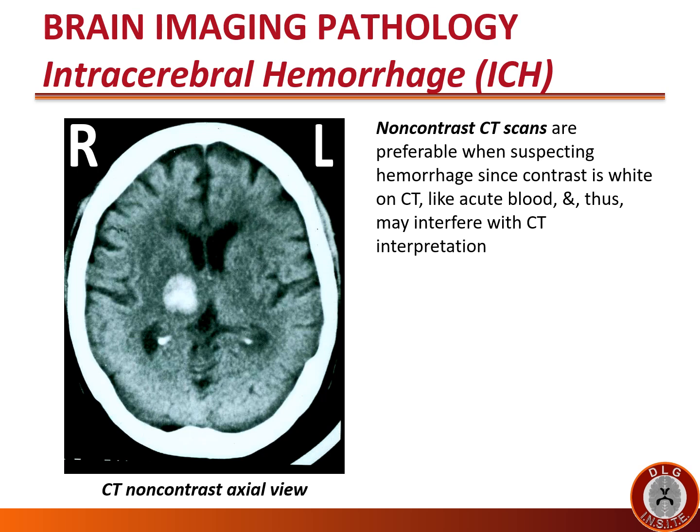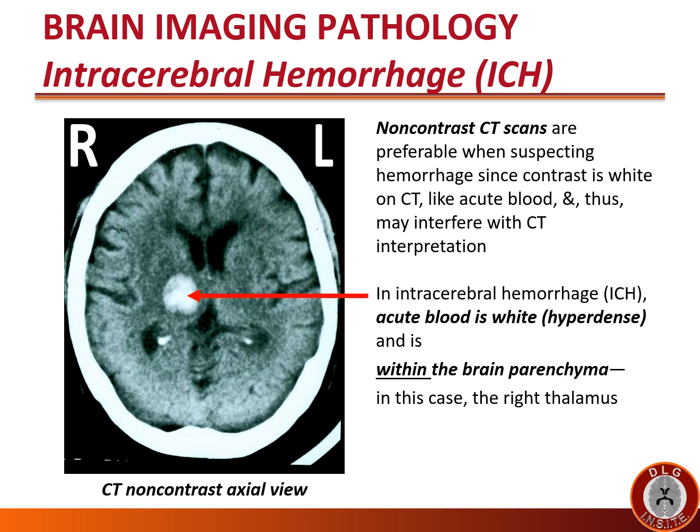Let's look more carefully at the imaging of intracerebral hemorrhage. Non-contrast CT scans are preferable when suspecting hemorrhage since contrast is white on CT, like acute blood, and may interfere with CT interpretation. In intracerebral hemorrhage (ICH), acute blood is white, hyperdense, and is within the brain parenchyma — in this case, the right thalamus — as seen in this CT non-contrast axial view.